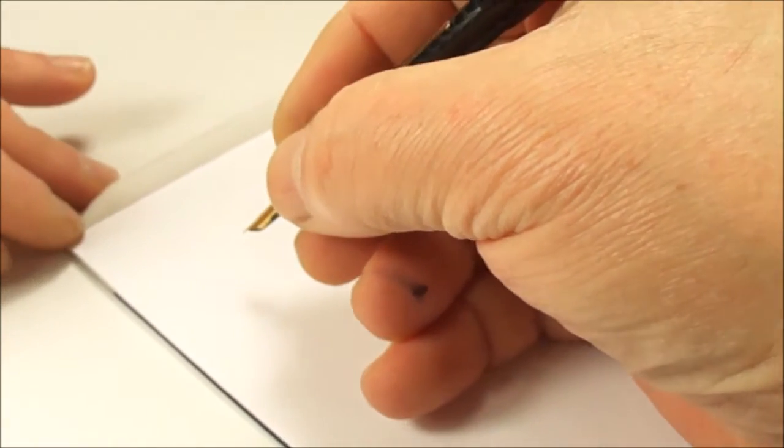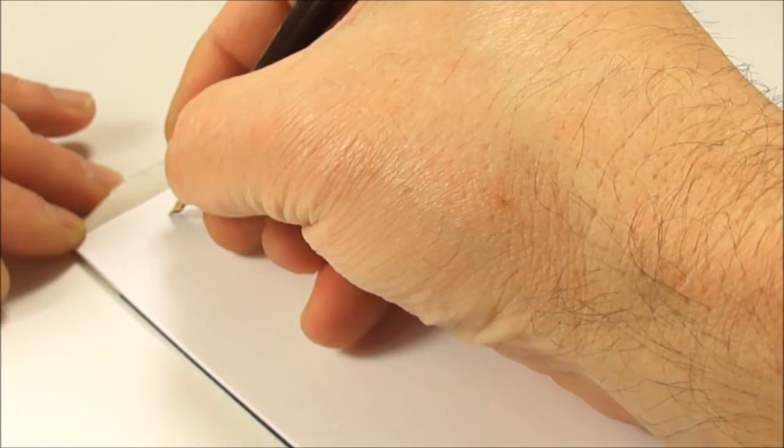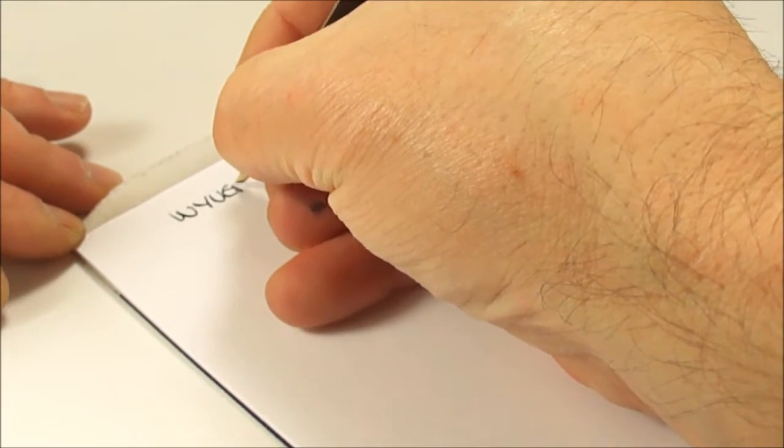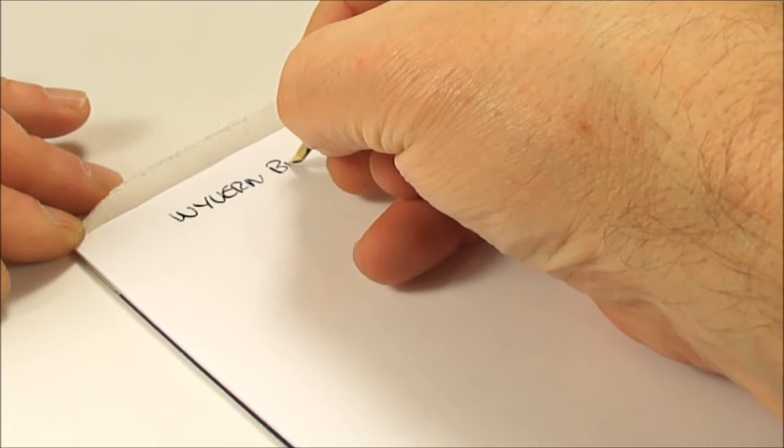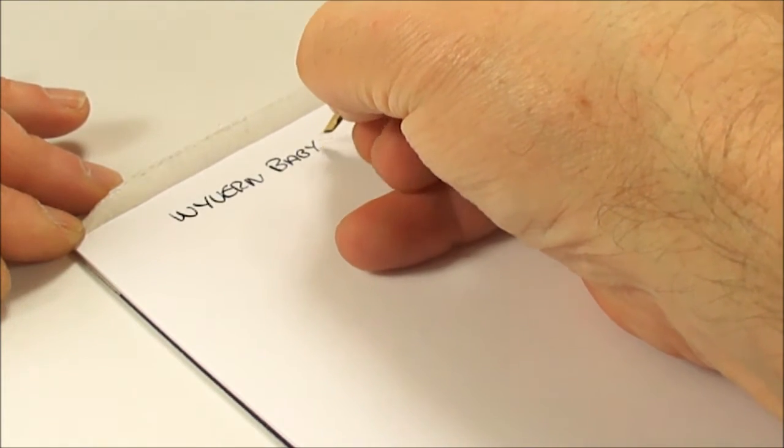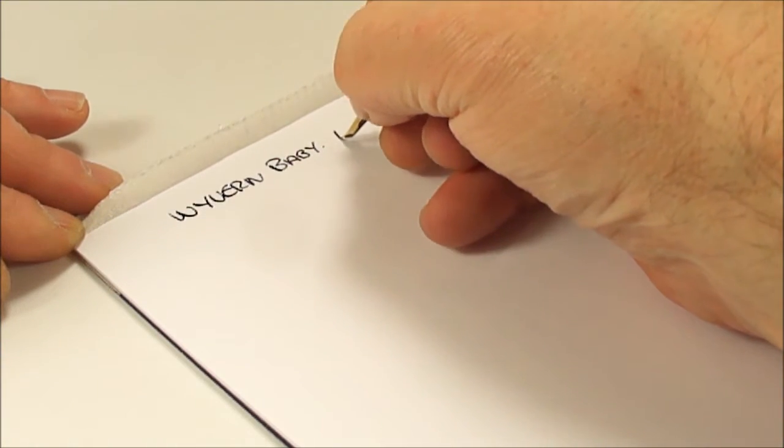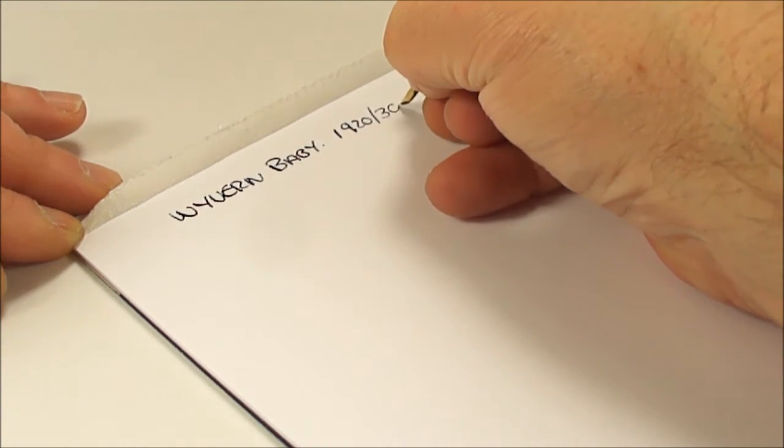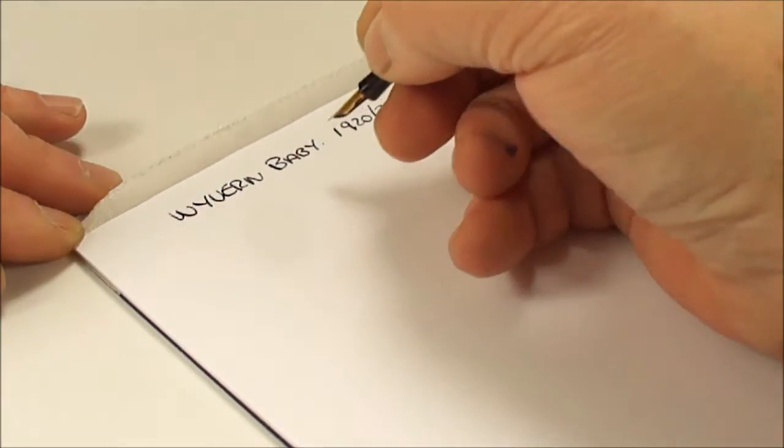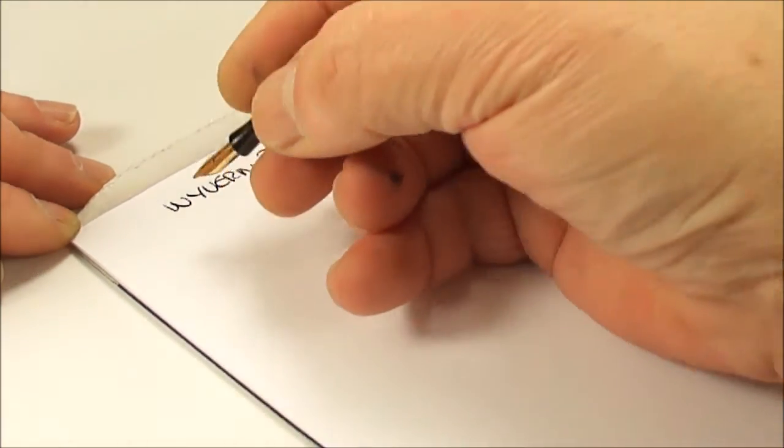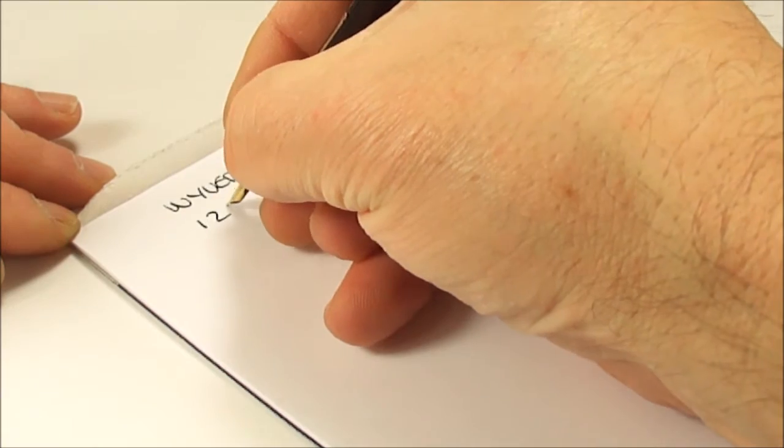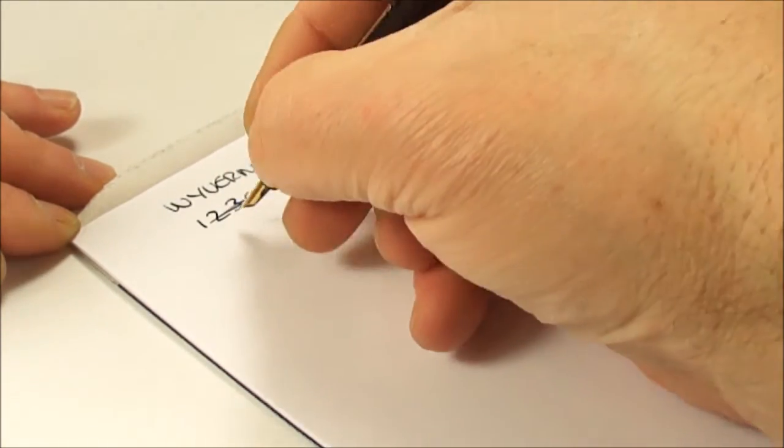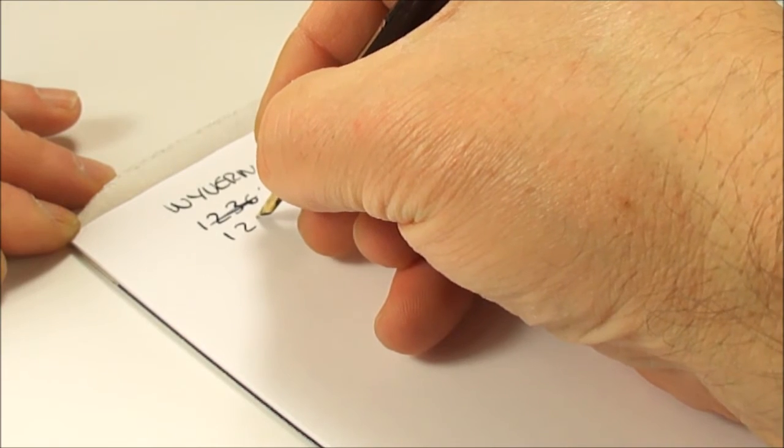So it's still quite a smallish pen, although saying that, it makes it a little bit more comfortable to hold. So let's see how it writes. So what we have is a Wyvern Baby fountain pen. As I said, I do not know too much about it, so I'm dating it from 1920s, 1930s. It's in this black chased hard rubber and it's actually writing.